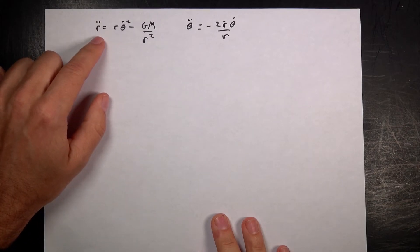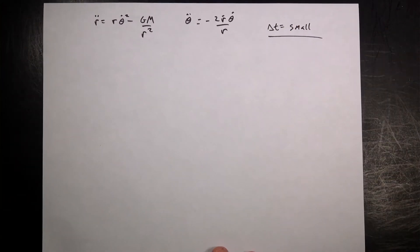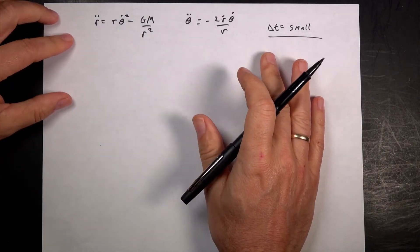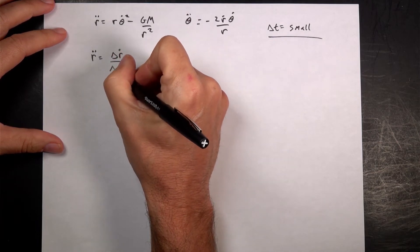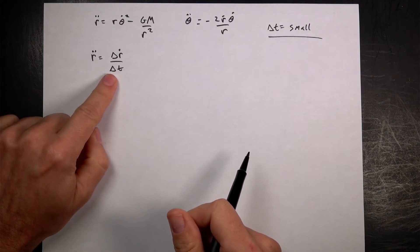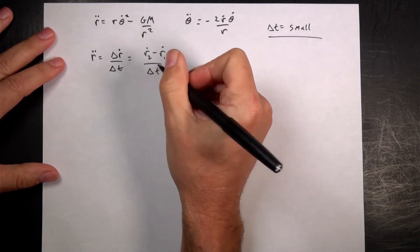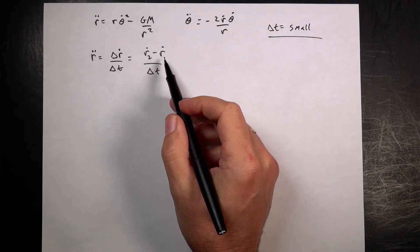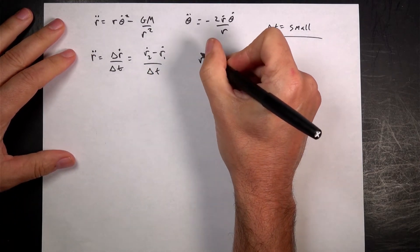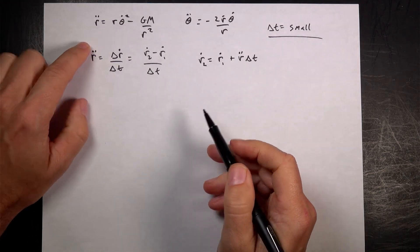Breaking this into small time intervals delta-t, I can assume r-double-dot is approximately constant. Then r-double-dot ≈ (r-dot₂ − r-dot₁) / delta-t, so r-dot₂ = r-dot₁ + r-double-dot · delta-t. I can solve for r-double-dot from my differential equation and use initial conditions to step forward.